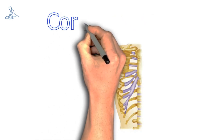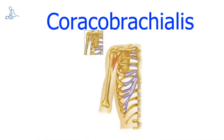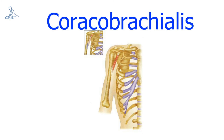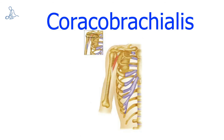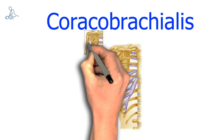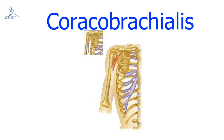Coracobrachialis. The origin of the coracobrachialis is the coracoid process of the scapula. The insertion of the coracobrachialis is the medial aspect of the humerus. The action of the coracobrachialis is to help stabilize, flex and adduct the humerus.